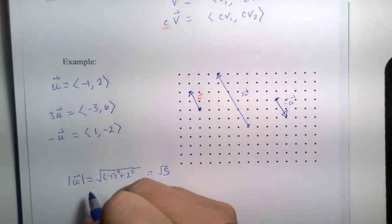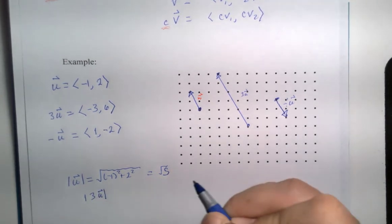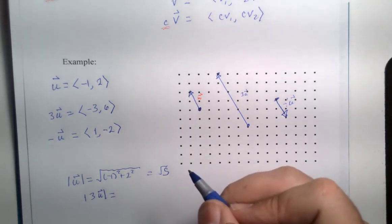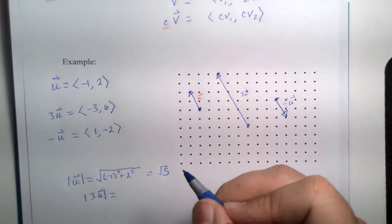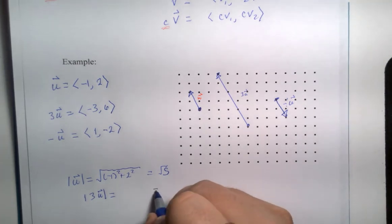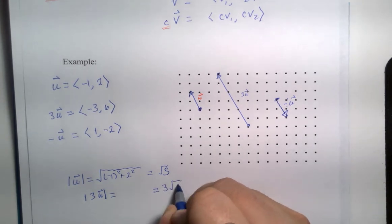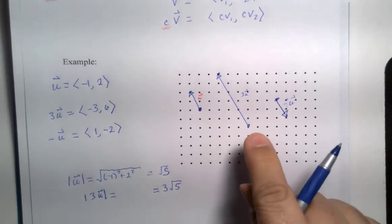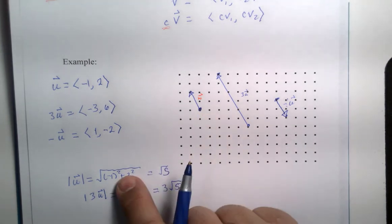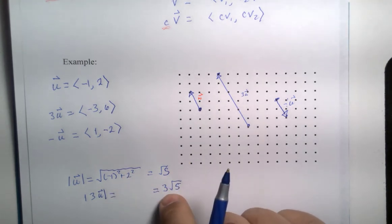And the magnitude of three u. Anyone want to take a guess? I'm not going to show the algebra arithmetic here. But it does turn out that it is three times root five. It is exactly three times longer than that. We could use similar triangles from geometry or go through the formula for magnitude and reduce it. But it will be the same.